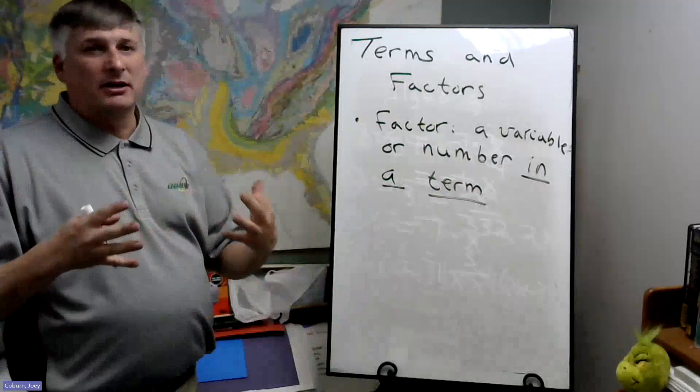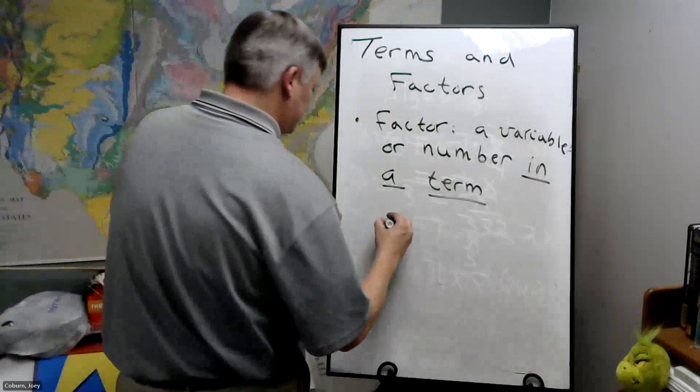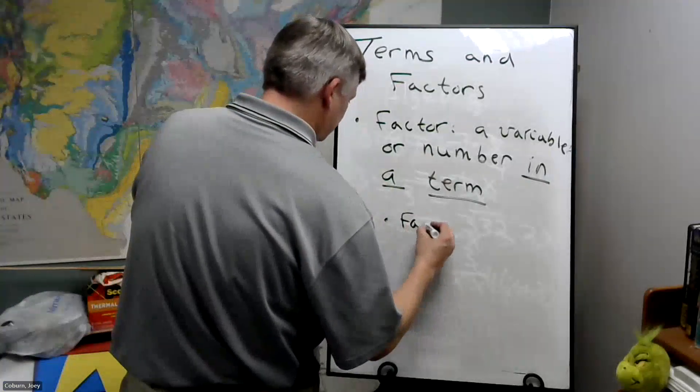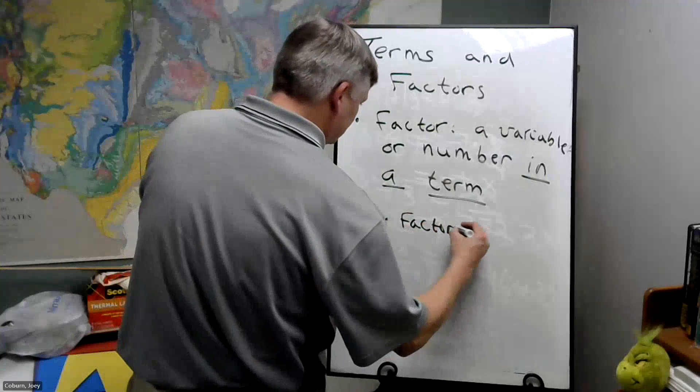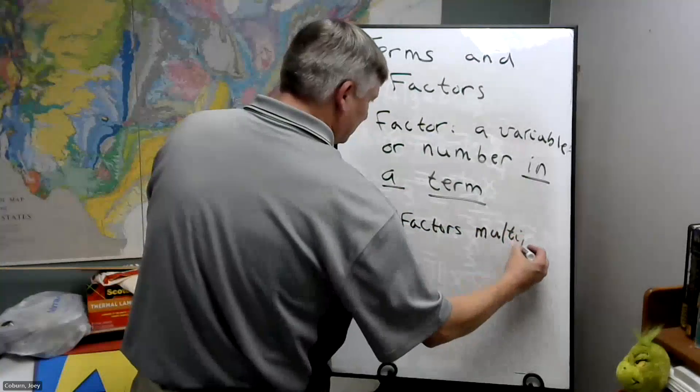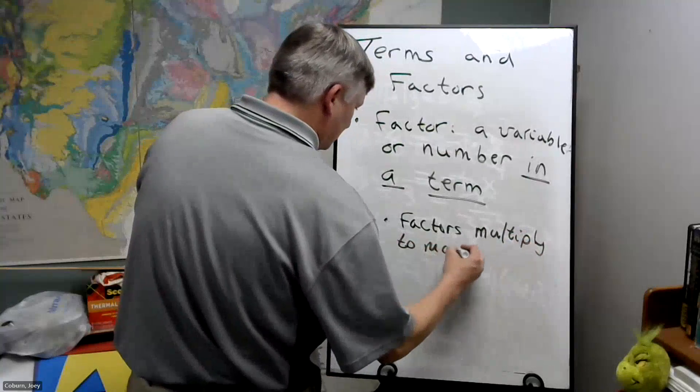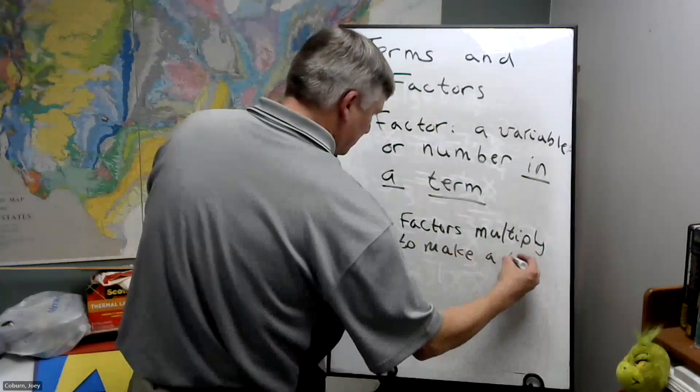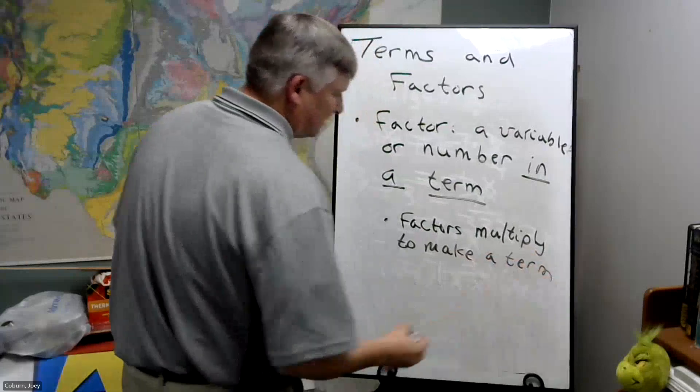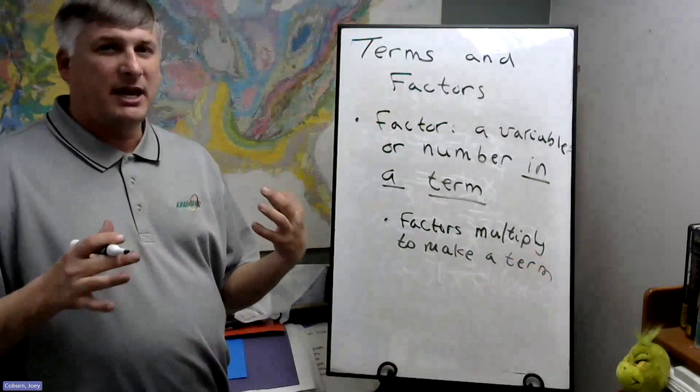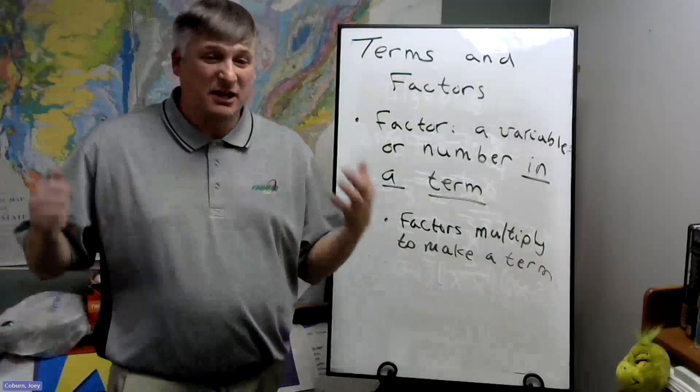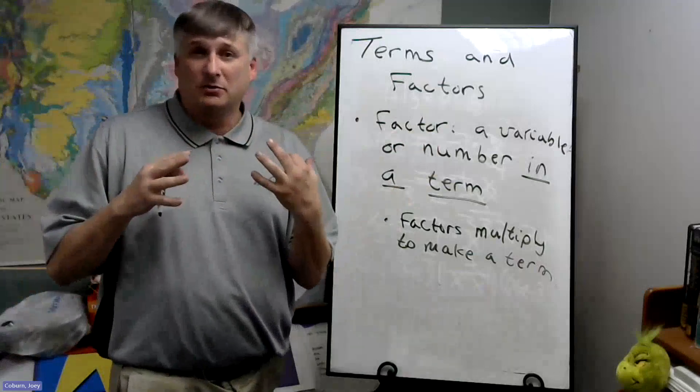Factors multiply to create a term. They come together through multiplication to make a term. It's kind of like glue. They're all glued together with multiplication.